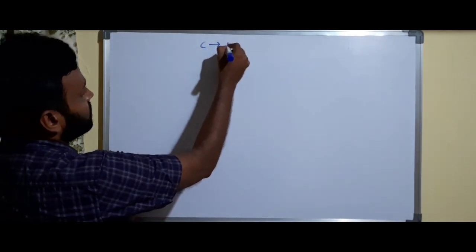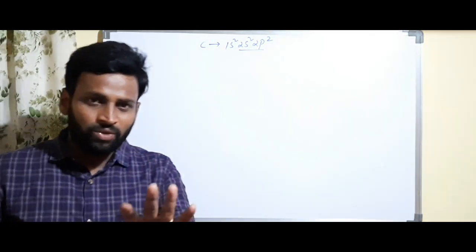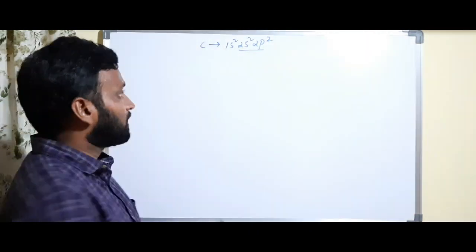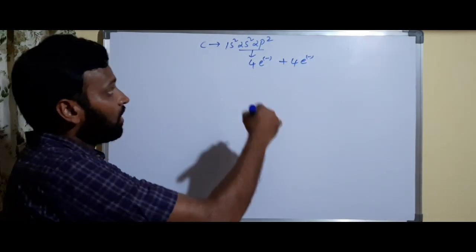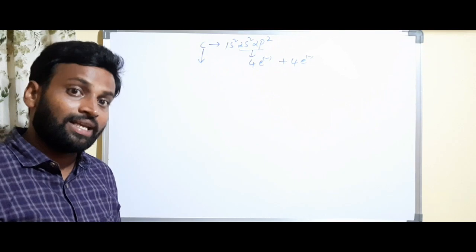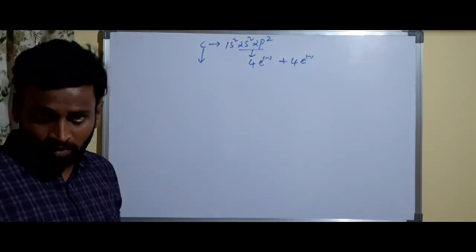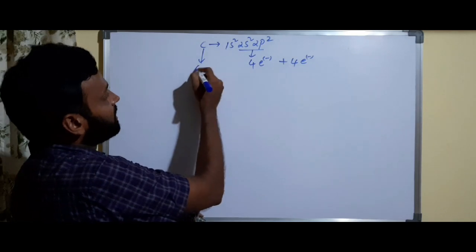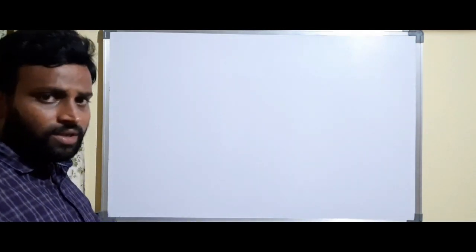Carbon has 4 electrons in the outermost shell. If it loses 4, it gets helium configuration; if it gains 4, it gets 6+4=10 electrons — neon configuration. But neither is possible for carbon. So carbon-like elements will try to share electrons in chemical bond formation instead of losing or gaining.